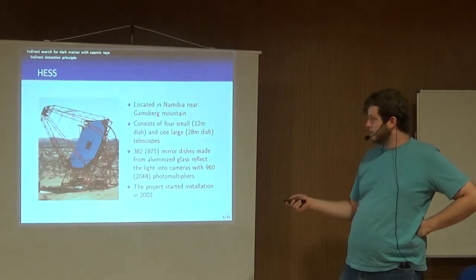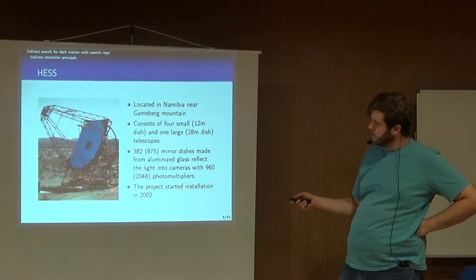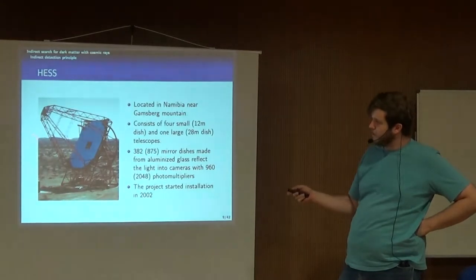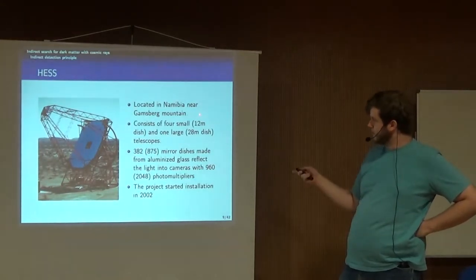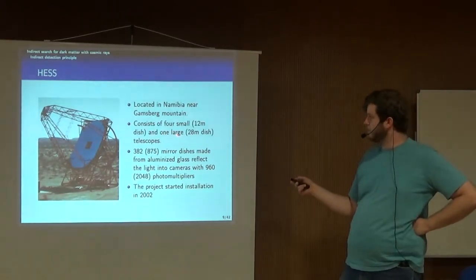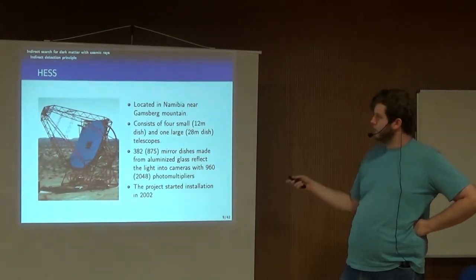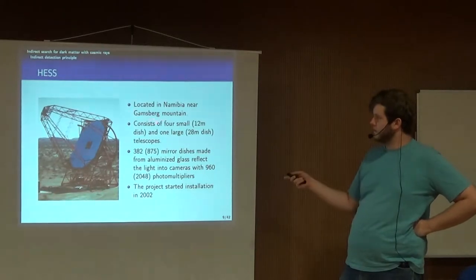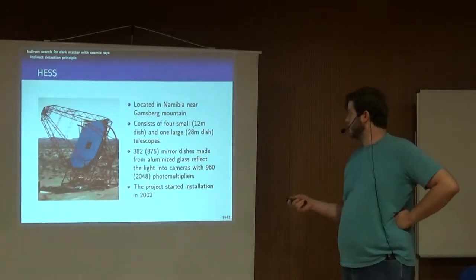HESS consists of four small telescopes with 12-meter dishes and one large telescope with a 28-meter dish. They are located in Namibia, on a mountain called Gamsberg — probably named by a German. The small telescopes have close to 400 individual mirror dishes that reflect incoming radiation onto a camera. The big telescope has more than twice that number of mirror dishes, made from aluminized glass.